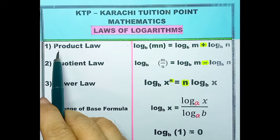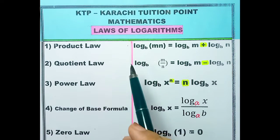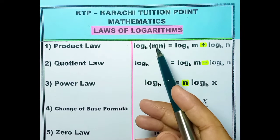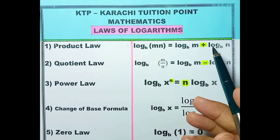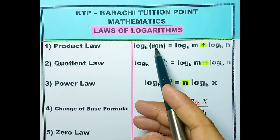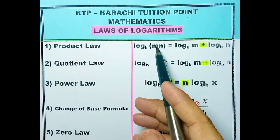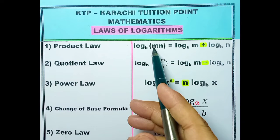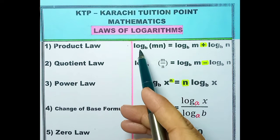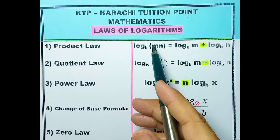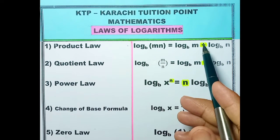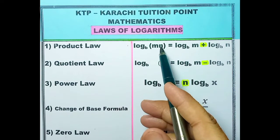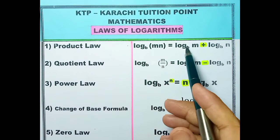Number 1 Product Law. Log of the product is equal to the sum of the logs of factors. You can see that here m and n multiply, so log base b to m plus log base b to n. This is the addition.